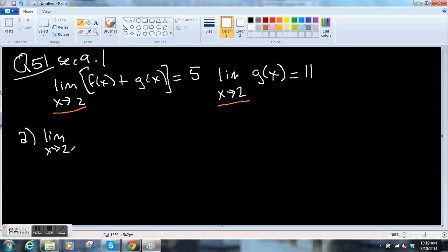So part a of this question says find the limit as x goes to 2 of f of x. So you do a little algebra thing. The limit as x goes to 2 of f of x plus g of x equals 5, limit of g of x equals 11, so f of x you're just going to subtract them. That's the limit x goes to 2 of f of x plus g of x minus the limit as x goes to 2 of g of x.